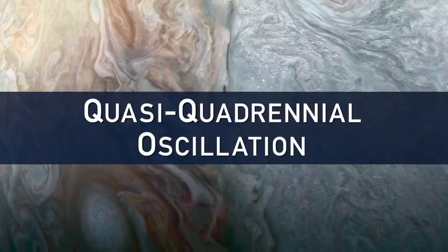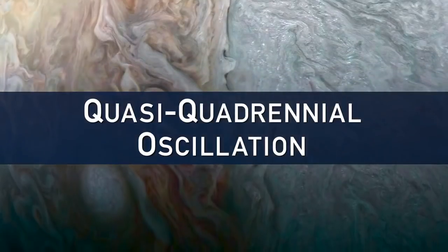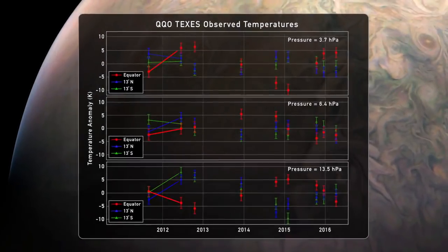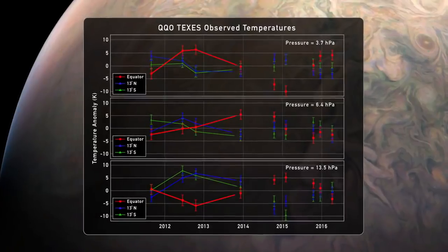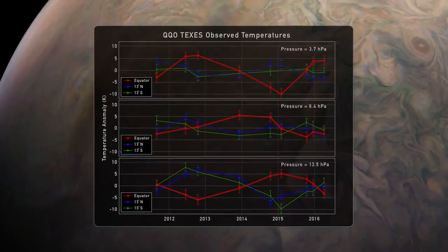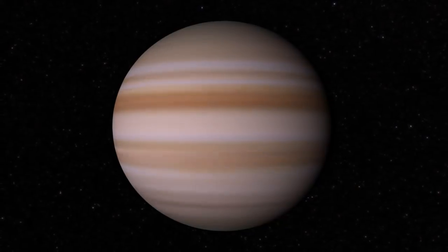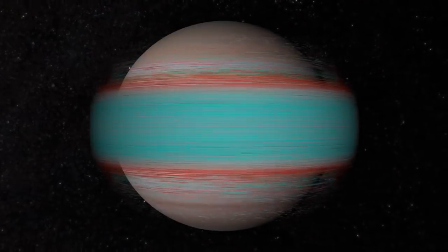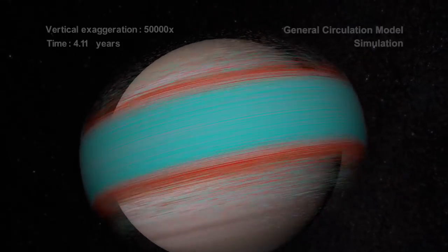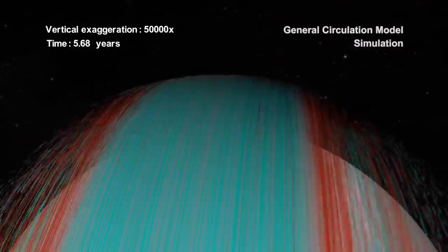The quasi-quadrennial oscillation of Jupiter's stratosphere is a temperature signal that we see at the equator, where we see the temperature get warmer and cooler approximately every four Earth years. We used a general circulation model where we focused on simulating the effects of small-scale waves produced from convection in Jupiter's equatorial region to simulate the QQO.